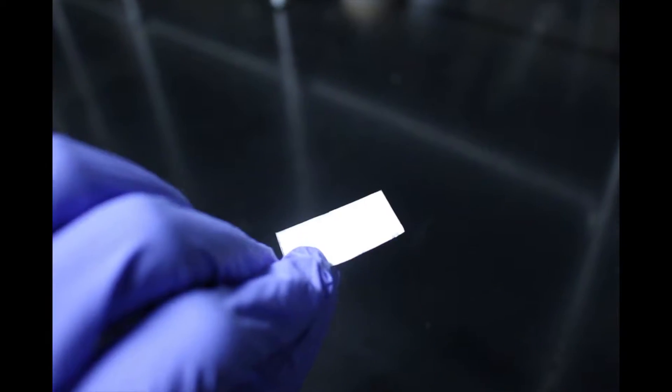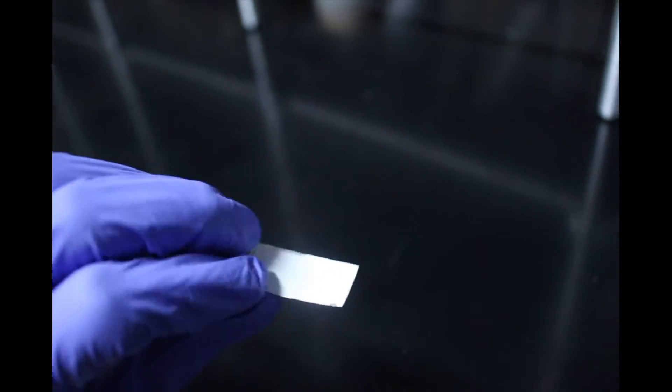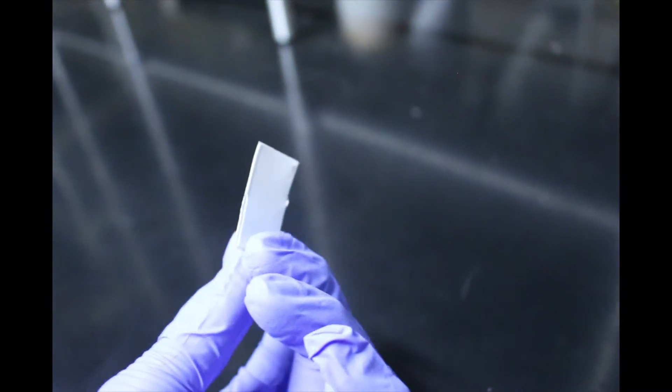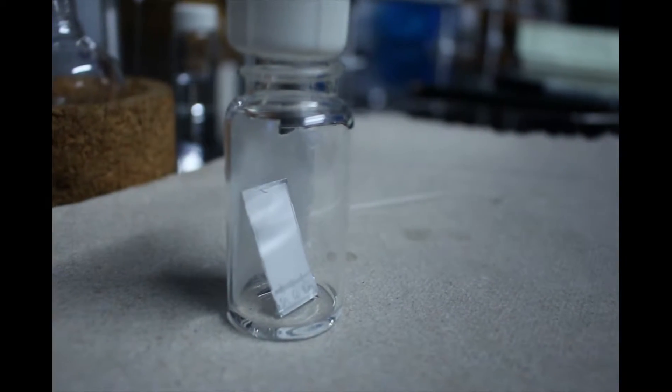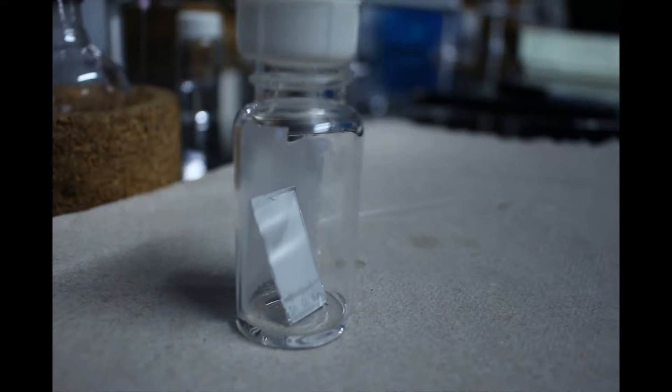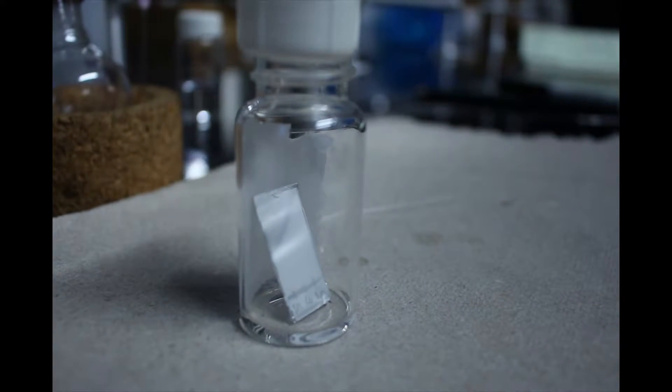In our lab, TLC is performed on a sheet of aluminum foil which is coated with a thin layer of adsorbent material called silica gel. The TLC plate is dipped into a solvent or combination of solvents called the mobile phase which carries the components up the plate based on polar interactions with both the mobile and the stationary phase.